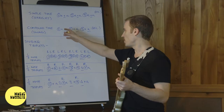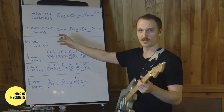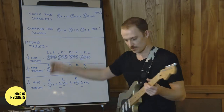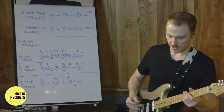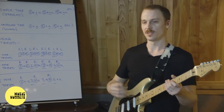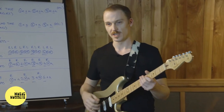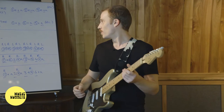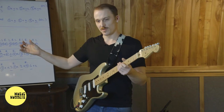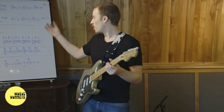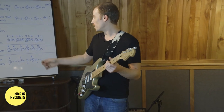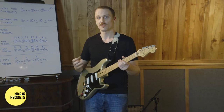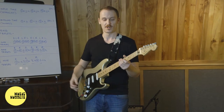Whereas in compound time, everything divides into threes. So instead of one and, two and, three and, four and — or more importantly, different from one e and a, two e and a — you would have one and a, two and a, three and a, four and a.